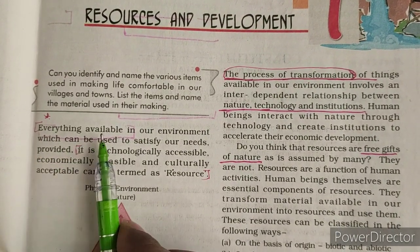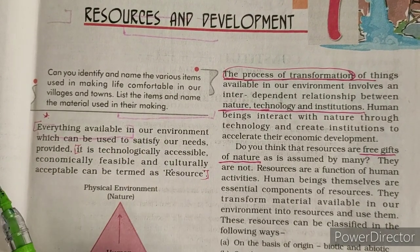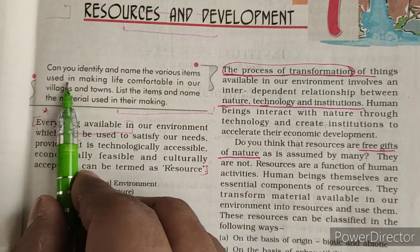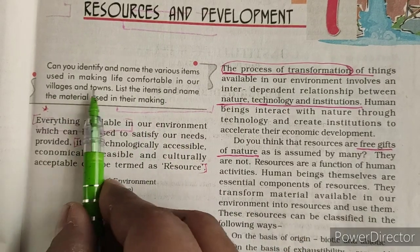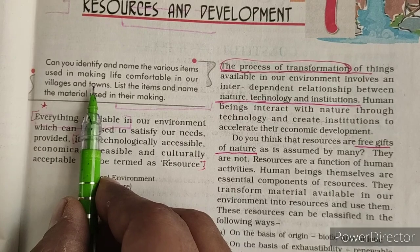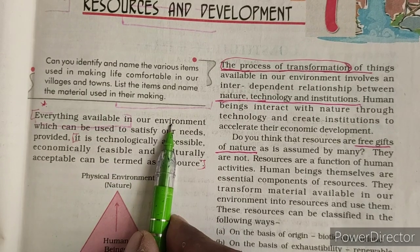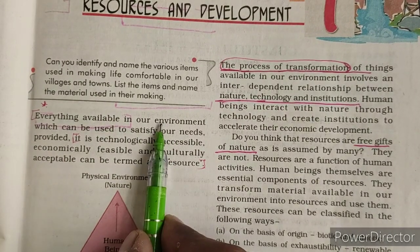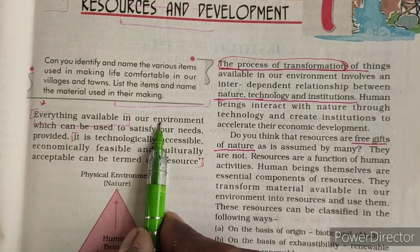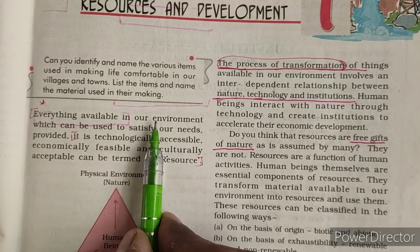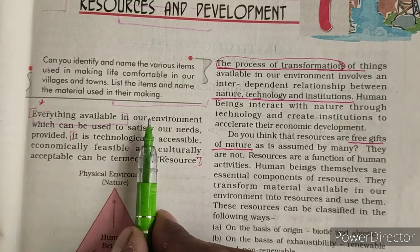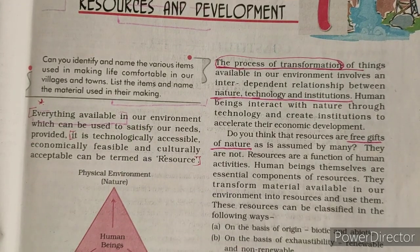Anything which is available in our environment. Can you identify and name the various items used in making life comfortable in our villages and towns? When we make our life comfortable, we use so many resources available in our environment — like air, land, water, rivers, mountains, minerals. Everything we use is called a resource.